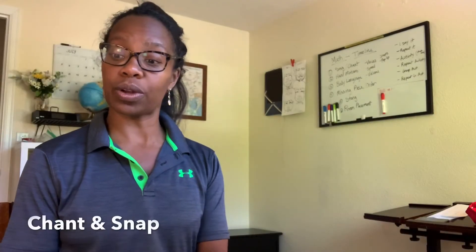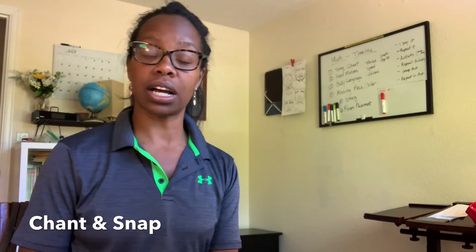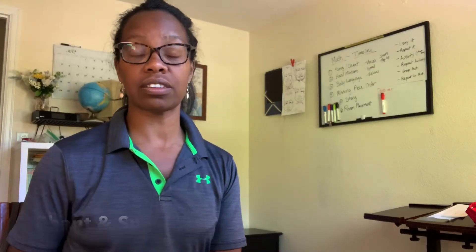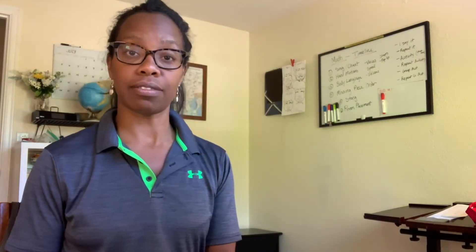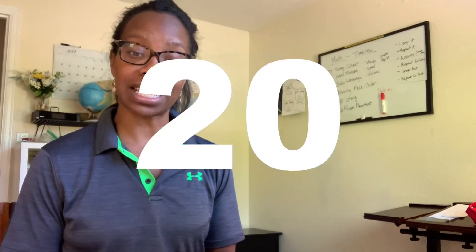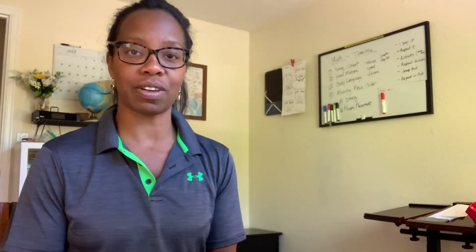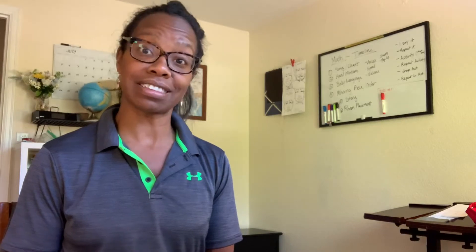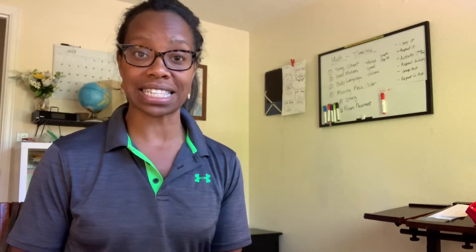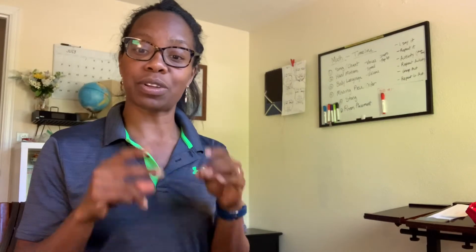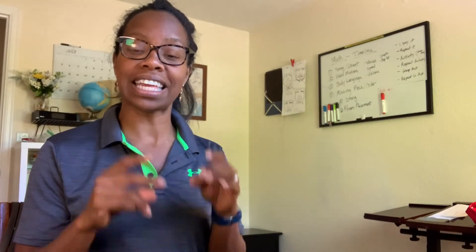And then we're going to chant it together. The chant simply goes: five, ten, fifteen, twenty, twenty-five, thirty, thirty-five, and so on. But while we chant it, we're also going to snap — snap, snap, snap — and we're going to start with five. Ready?